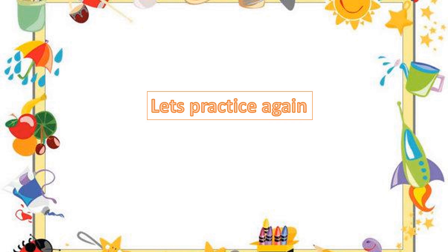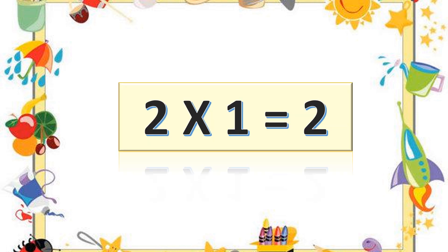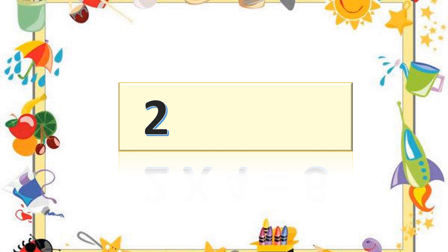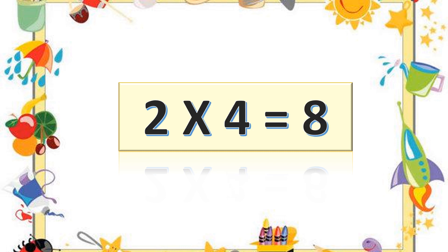Let's practice again. Two ones are two. Two ones are two. Two ones are two. Two twos are four. Two twos are four. Two twos are four. Two threes are six. Two threes are six. Two fours are eight.